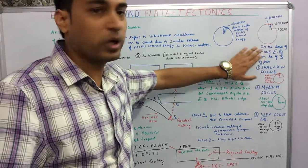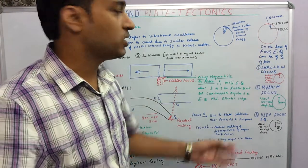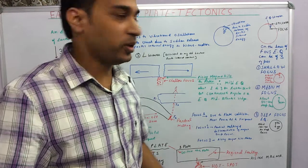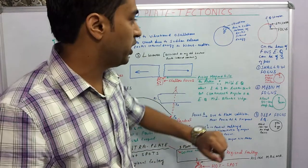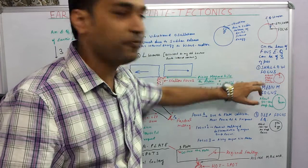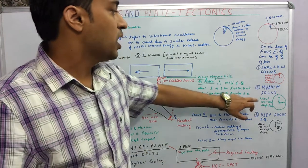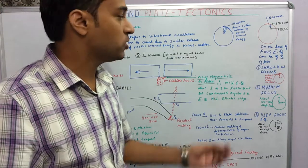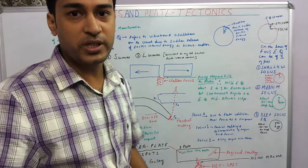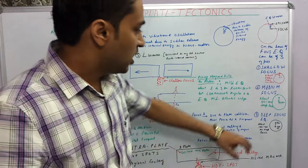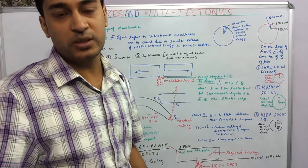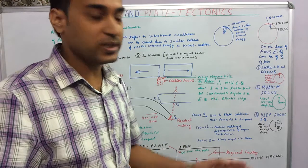Now on the basis of focus, we can divide the earthquakes into three types. Shallow focus earthquakes are those where the focus is about 50 km deep from the Earth's surface. Medium focus earthquakes are those in which the focus is about 50 to 100 km inside the Earth. And deep focus earthquakes are those where the focus is about 100 to 700 km inside the Earth.